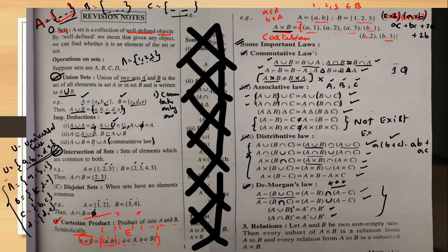That is De Morgan's Law — one of the most important properties. Now you can see all the important properties have been covered.